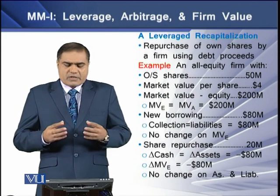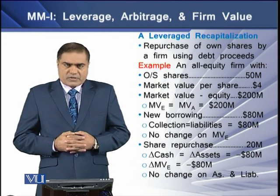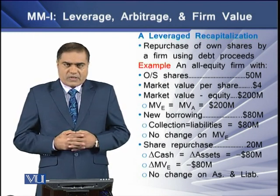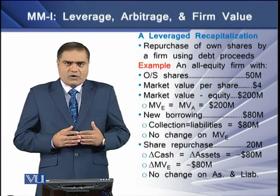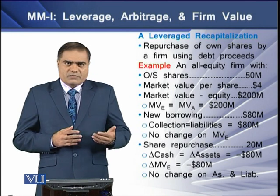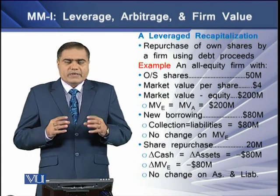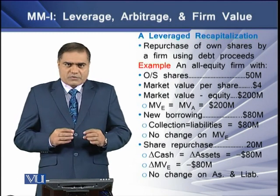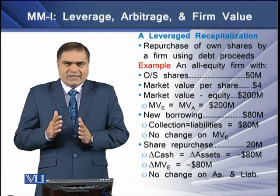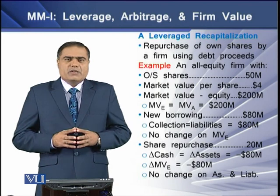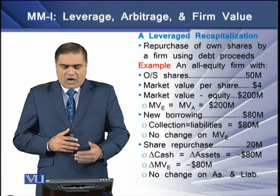Suppose we have an all-equity firm with outstanding shares of 50 million. The market value per share is $4, so the market value of equity is $200 million — which is 50 million shares multiplied by $4 per share. In an all-equity firm, the market value of equity is equal to the market value of assets. So in other words, the value of the firm's balance sheet is equal to $200 million in our case.